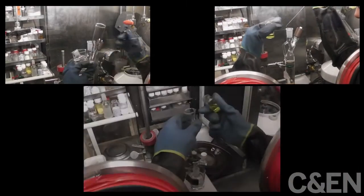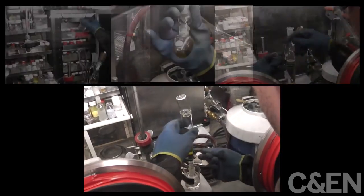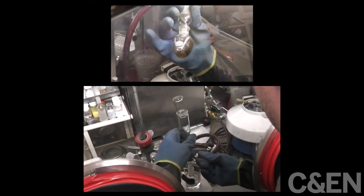When he's ready to run the reaction, McDonald adds the terbium and ligand solution to the top of the column, and out the bottom comes the dark maroon terbium plus 2 complex.